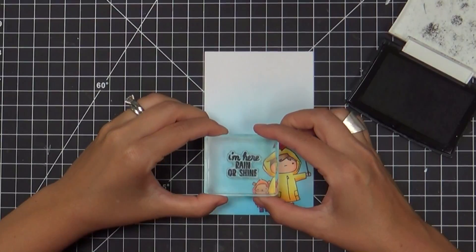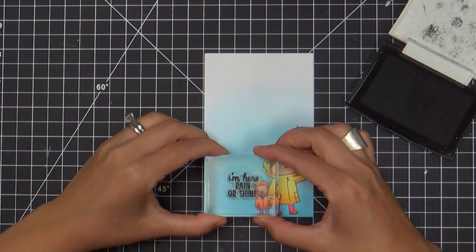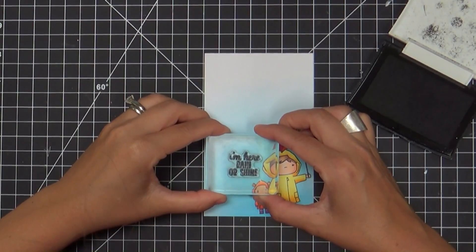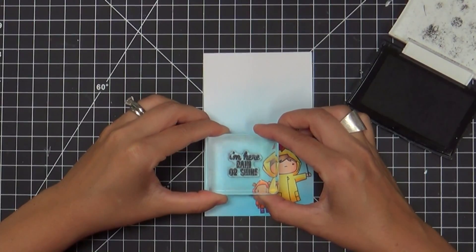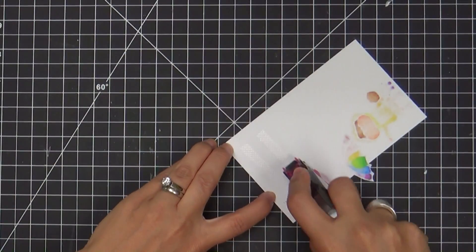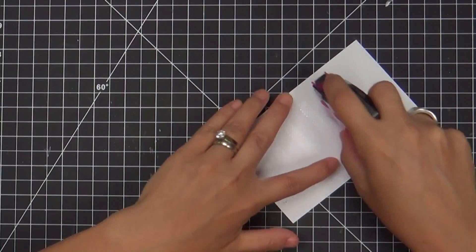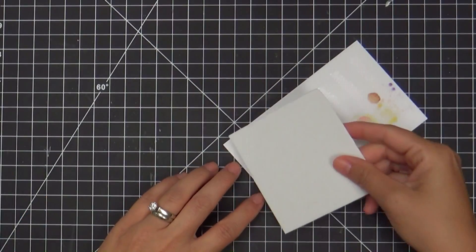First of all, I got to add my sentiment before I pop everything up. And this is a sentiment that's also from the Chance of Rain stamp set. I'm using my VersaFine Onyx Black, my favorite all time ink for stamping sentiments.